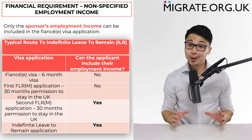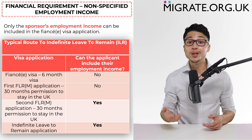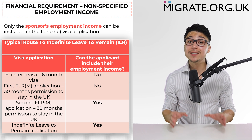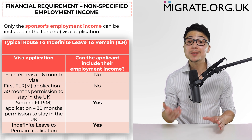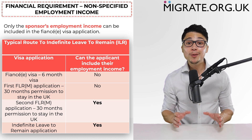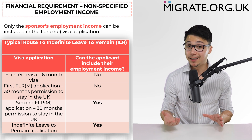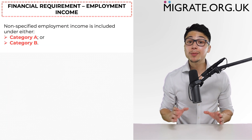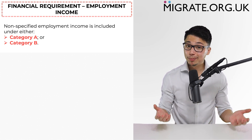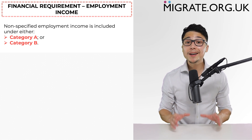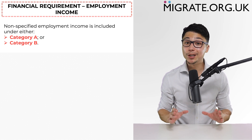Therefore, as shown in this table, in your immigration journey towards the applicant obtaining indefinite leave to remain — otherwise known as permanent residency — the earliest stage at which the applicant can include their employment income towards the financial requirement is in the second FLR(M) spouse visa extension application. Non-specified limited company employment income can either be included under category A or under category B. Category A and B have different requirements, require different documentation, and calculate income differently, so you must know which category you will be relying on.